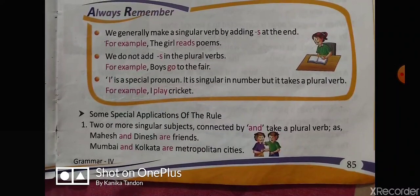Next are some special applications of the rule. First: two or more singular subjects connected by 'and' take a plural verb. For example, 'Mahesh and Dinesh are friends' — since we are talking about both of them, it is plural. Similarly, 'Mumbai and Kolkata are metropolitan cities' — Mumbai and Kolkata are two different cities, so 'are' is used.